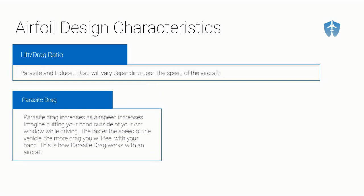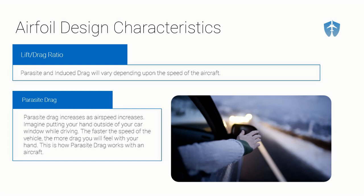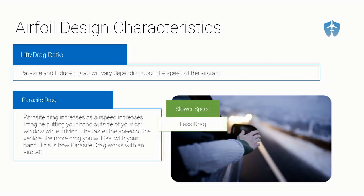Why does parasite drag increase with speed? Imagine putting your hand outside your car while driving. That's basically like having an antenna on an aircraft. If you're going 10 miles an hour and stick your hand out, you won't feel very much drag. As you speed up to 75 or 80 miles an hour and stick your hand out, you'll feel much more drag. That is parasite drag — it works the same way with an airplane. Slower speed means less drag; faster speed means more drag.